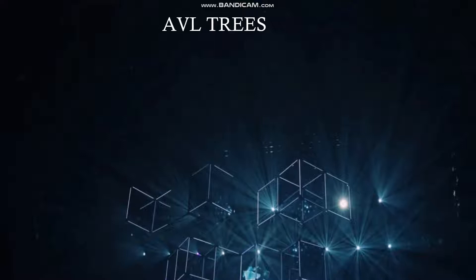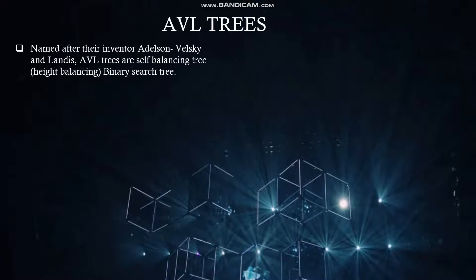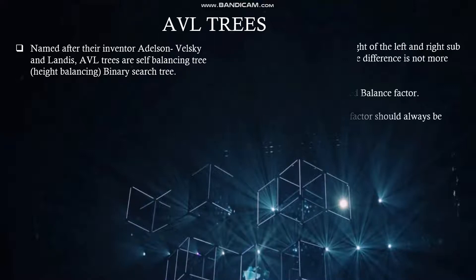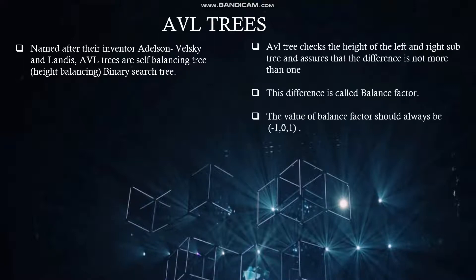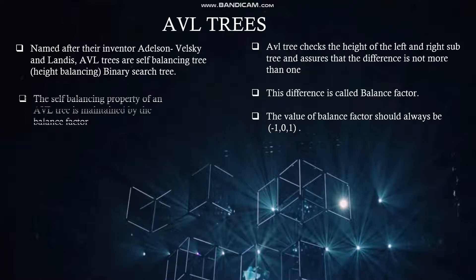Now, what is meant by an AVL tree? Named after their inventors Adelson, Velsky, and Landis, AVL trees are a self-balancing binary search tree. It checks the height of the left and right subtree and assures that the difference is not more than 1 — that is either -1, 0, or 1. This is known as the balance factor.